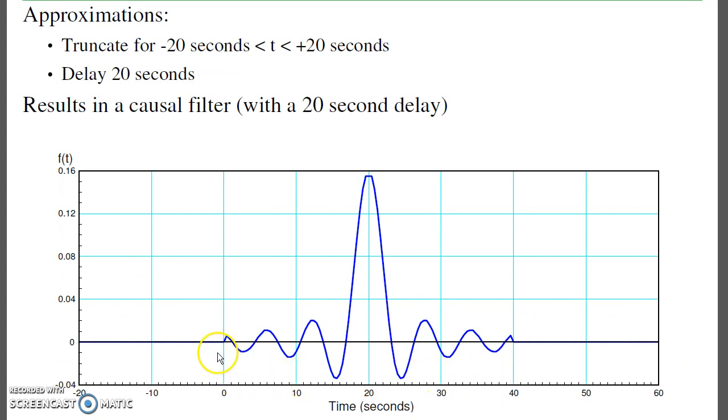Suppose I took that impulse response and clip it between minus 20 and plus 20. I'll then delay it by 20 seconds. So this is now the impulse response. Note that now the filter's causal. Before t equals zero, nothing happens. Then I get the ringing.